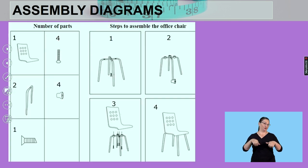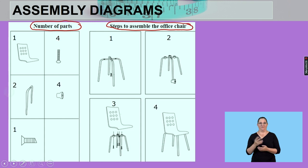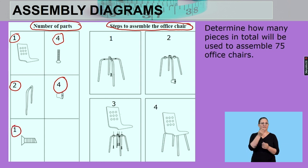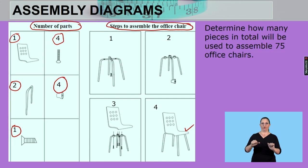So if I look at this example, we have the number of parts on the left, and the steps to assemble this office chair on the right hand side. Looking at these things, we've got one of those, four of those, two of those, four of those, and one of those. It tells us the amount of pieces that come inside maybe the box that we need to put together to create this chair at the very end.